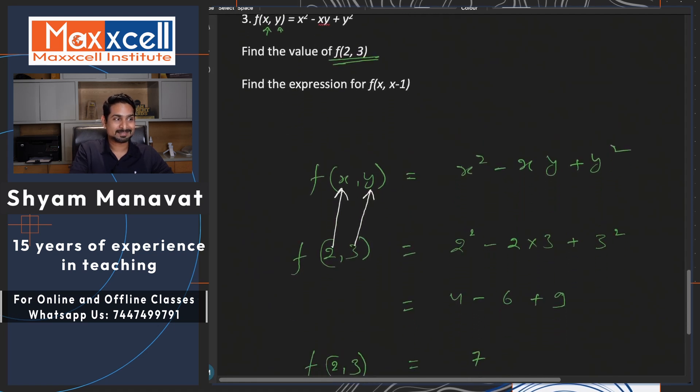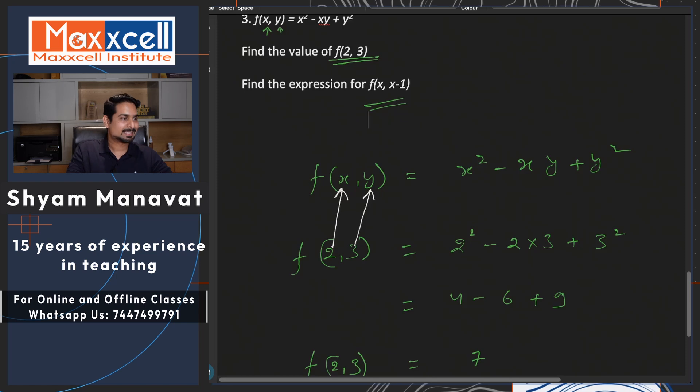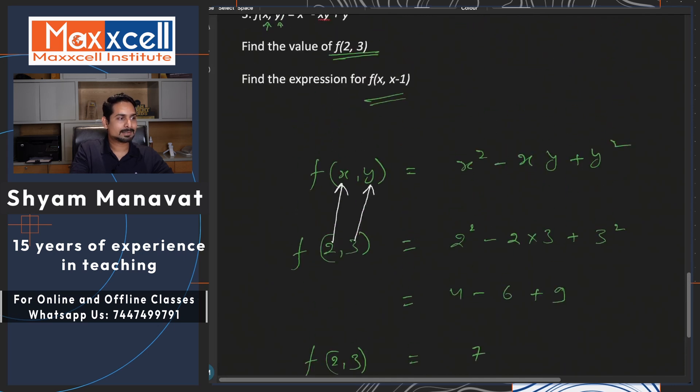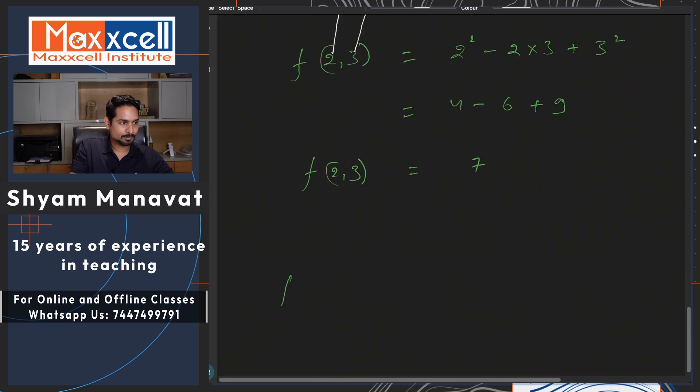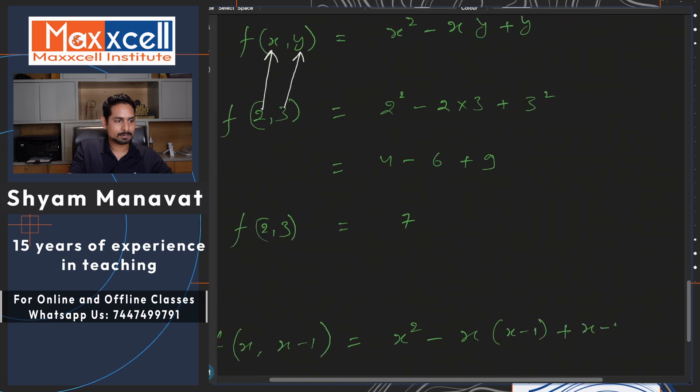And you know what? The good part is you do not get such kind of direct question in the exam. We are building concepts. You remember that is concept builder videos for functions. So we will see the exam questions also soon. First, build your concept stronger. Now here you got the function as f of x comma x minus 1. That means, instead of y, we need to substitute x minus 1. So if I substitute x square minus x times x minus 1 plus x minus 1 whole square.